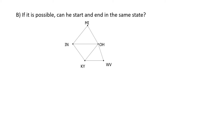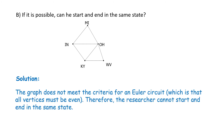If it's possible, can the researcher start and end in the same state? Unfortunately, the graph does not meet the criteria for an Euler circuit, which requires all vertices to be even. Therefore, the researcher cannot start and end in the same state.